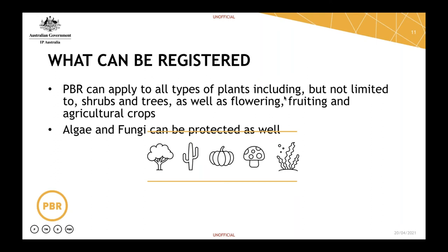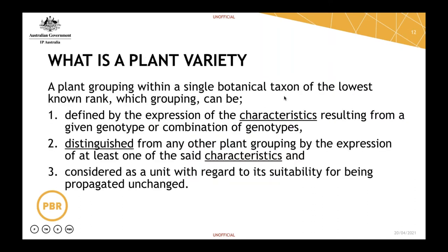All sorts of plants can be registered for PBR — things such as shrubs, trees, flowering and fruiting plants, and agricultural crops, but certainly not limited to those. Algae and fungi can also be protected. To define a plant variety, it's a plant grouping within a single botanic taxon of the lowest known rank, which grouping can be: one, defined by the expression of characteristics resulting from a given genotype or combination of genotypes; two, distinguished from any other plant grouping by the expression of at least one of said characteristics.